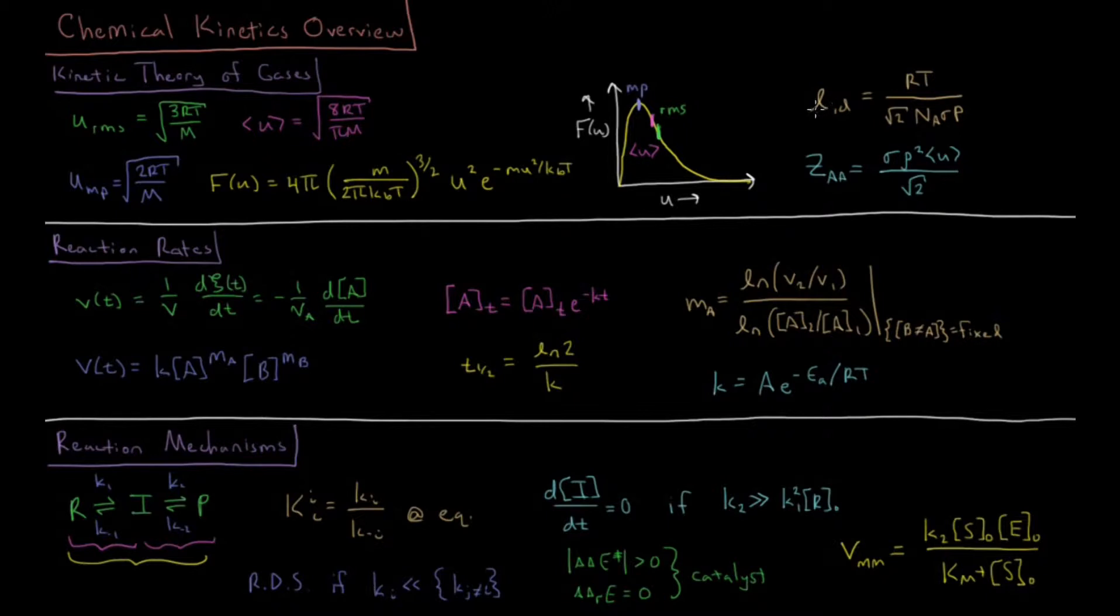We also calculate some other properties like the mean free path which determines the average distance a particle travels before it gets in a collision with another gas particle, RT over square root of 2 Avogadro's number times cross sectional area which is an effective molecular size times pressure.